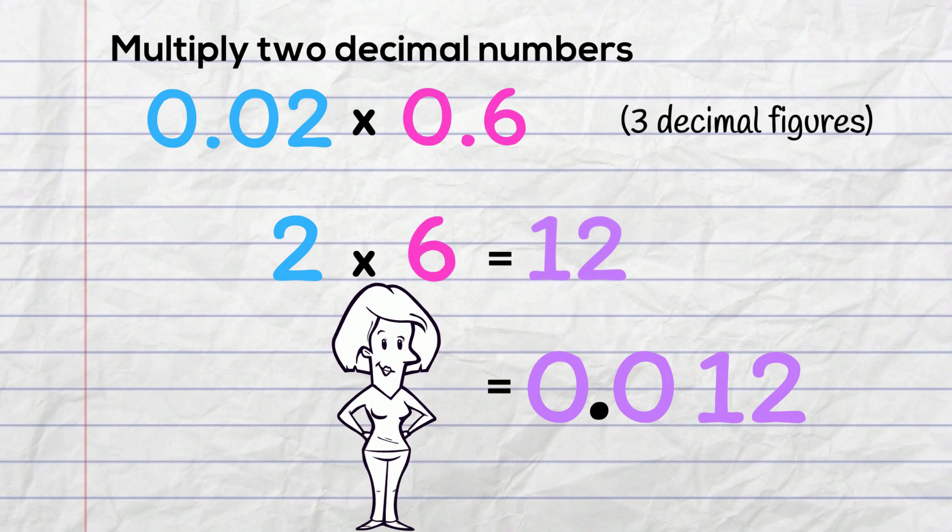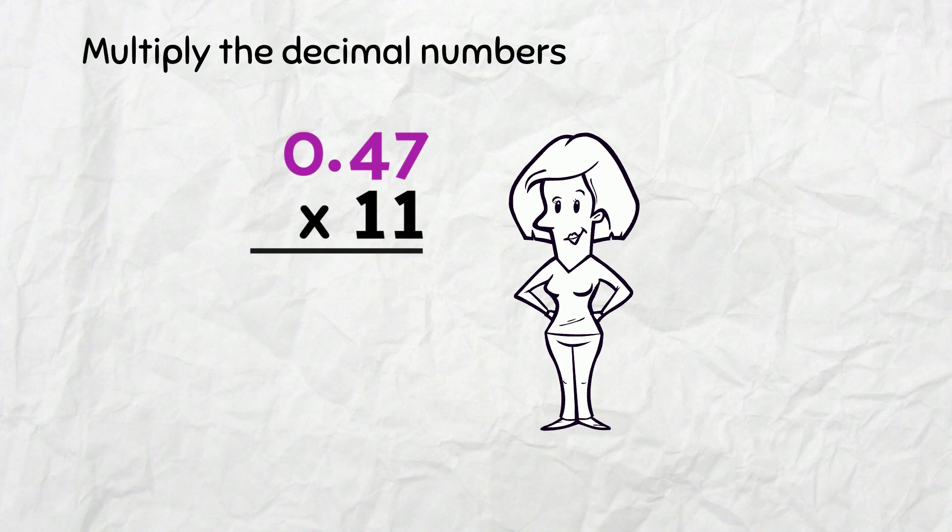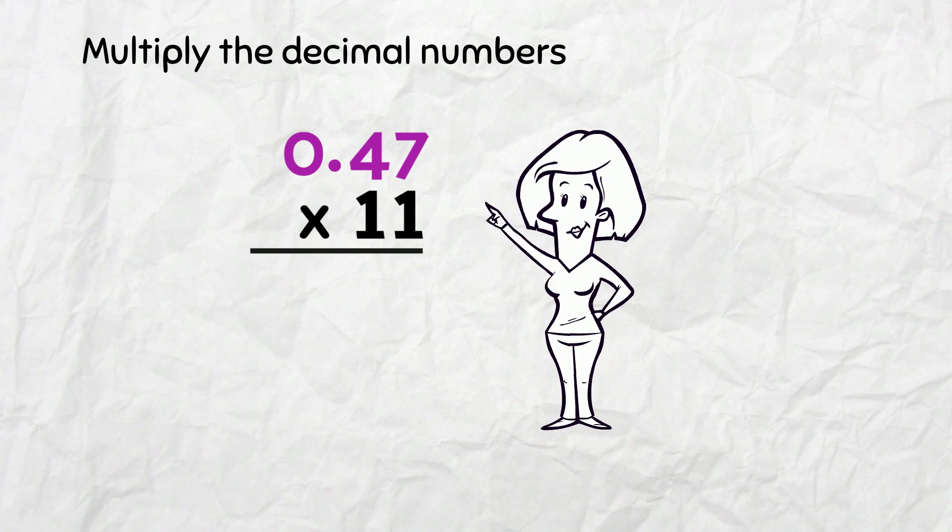Let's do another one! 0.47 times 11. Ready to go in standard algorithm form this time! I'll ignore the decimal point right now and just multiply like it's not even there!